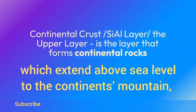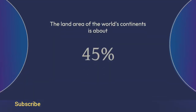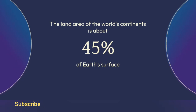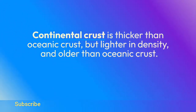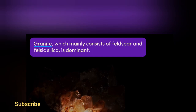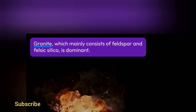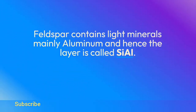Continental crust, also called the SIAL layer or upper layer, forms continental rocks which extend above sea level to the continent's mountains, covering about 45% of Earth's surface. Continental crust is thicker than oceanic crust but lighter in density and older. The discontinuity between continental and oceanic crust is called the Conrad discontinuity. Granite, which mainly consists of feldspar and felsic silica, is dominant; feldspar contains light minerals, mainly aluminum, hence the layer is called SIAL.